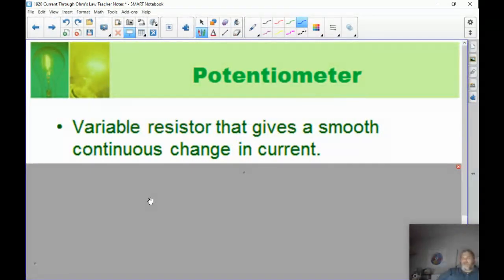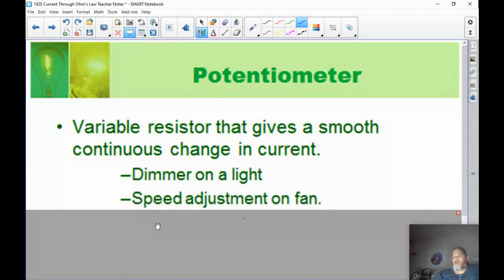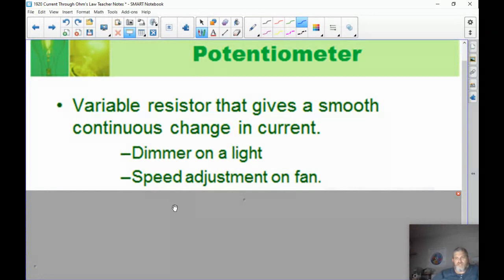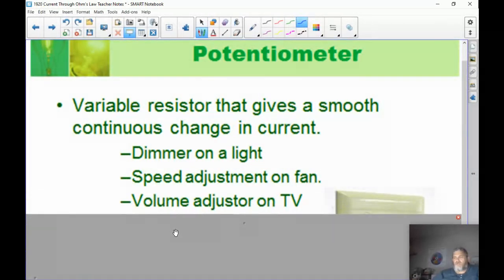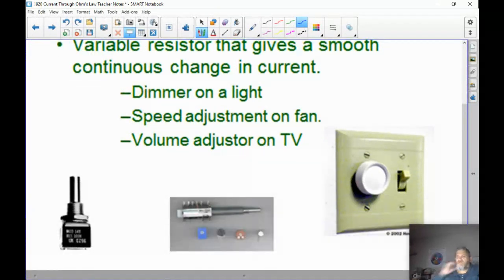A potentiometer is a resistor that is variable, that can change. If you've ever had a dimmer switch, when you turn a dimmer switch on, it adjusts the resistor. If you want your light to be bright, you turn the resistance down. If you want it to be dimmer, you turn the potentiometer the other way and it gives you more resistance, less current, and less light. Dimmer on the light, speed adjustment on the fan (high, medium, and low) adjusts basically how much current goes into the motor. Volume adjustments on the TV is one of those. So there are some pictures of some potentiometers right there.